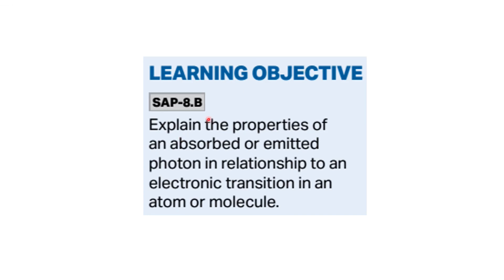The learning objective of this topic was to explain the properties of an absorbed or emitted photon in relationship to an electronic transition in an atom or molecule. In this video, I showed that when an electron absorbs a photon the energy of the molecule increases, and when it moves from a higher to lower energy level it emits a photon and the energy of the atom or molecule decreases.